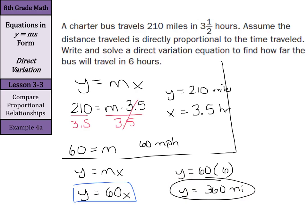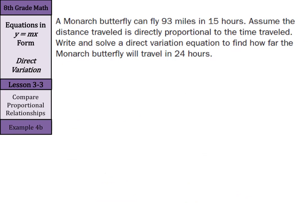Let's look at another one that's very similar to this. A monarch butterfly can fly 93 miles in 15 hours. Assume the distance traveled is directly proportional to the time traveled. Write and solve a direct variation equation to find out how far the monarch butterfly will travel in 24 hours.